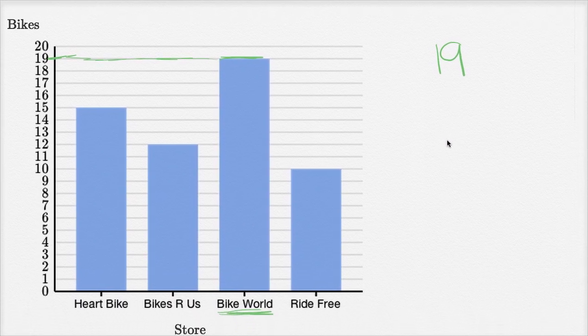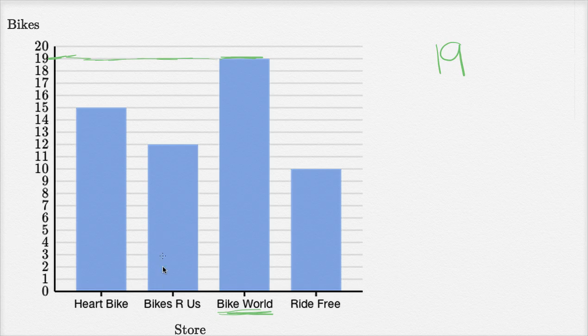So Bike World has 19. How many does Bikes Are Us have? This is Bikes Are Us right over here. Bikes Are Us has 12 bicycles.